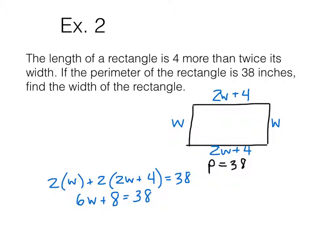And then from there, we're going to follow our regular two-step equation rules. Subtract 8, 6W equals 30. And finally, W equals 5. And that's what we were asked to find this time. The width is 5 inches. Alright, so the first two were not too difficult. Let's move on to a couple of age word problems. So these are a little bit more challenging. They're going to take us a little bit longer.